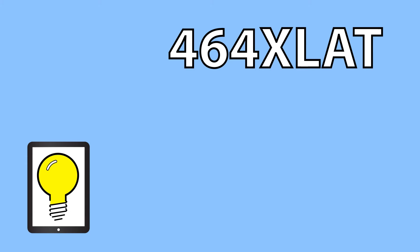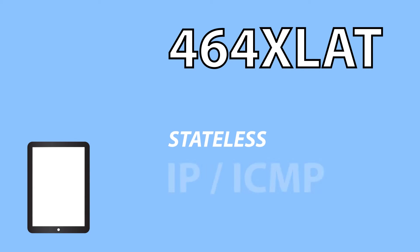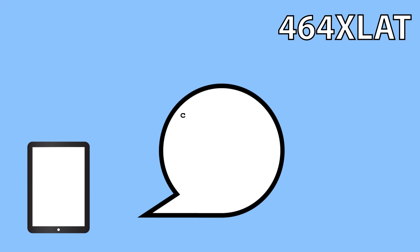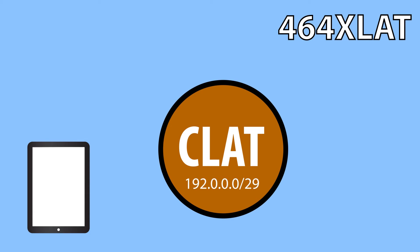With 464xLAT, the client application uses a stateless IP-ICMP translation algorithm, which is a small piece of code that makes the client think it has an IPv4 address. This software is called CLAT. The IPv4 address comes from this specially reserved prefix.